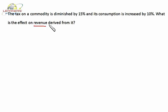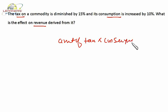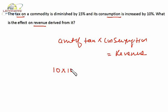Revenue is dependent on tax and consumption. Tax into consumption equals revenue — that is, amount of tax into its consumption is revenue. Suppose the amount of tax is 10 and its consumption is 10, that means the revenue is 100.